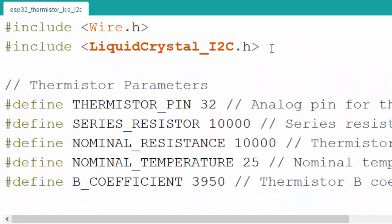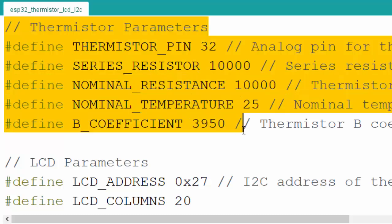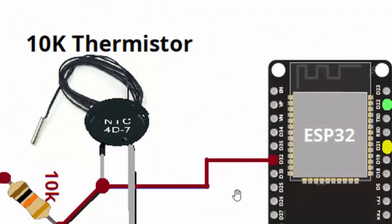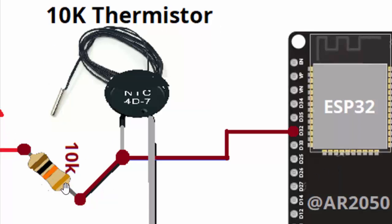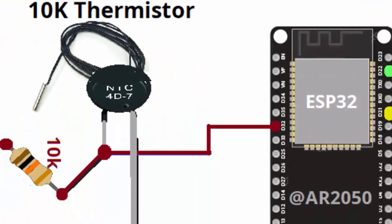Now let's look at the code. We used two header files: Wire and LiquidCrystal I2C library. These are the coefficients used for the Steinhart equation. The thermistor pin is analog pin 32. In the circuit diagram: a 10K thermistor with a 10K pull-up resistor is connected to D32, the analog input of the ESP32. SCL is on pin D22 and SDA on pin D21 of the ESP32 board. These two I2C pins connect to the I2C module, which connects to the 16x2 LCD.